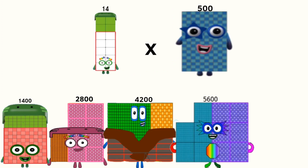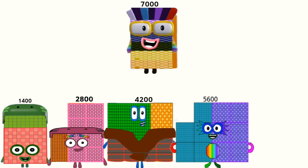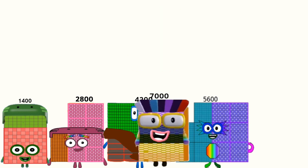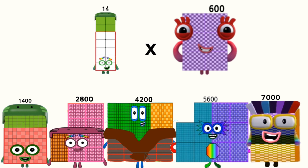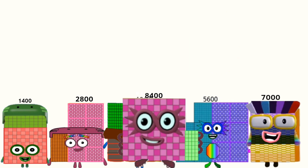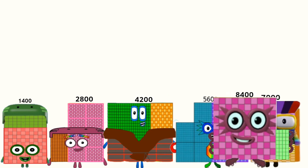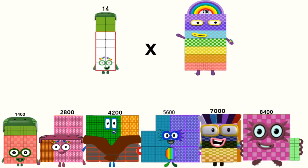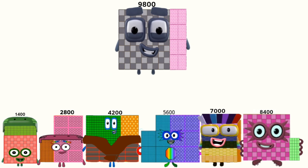14 times 500 equals 7,000. 14 times 600 equals 8,400. 14 times 700 equals 9,800.